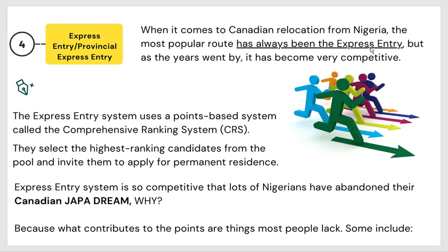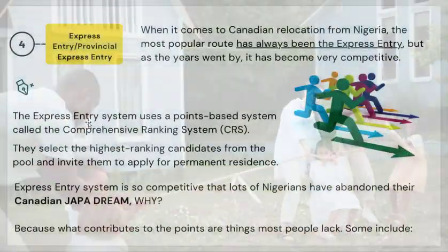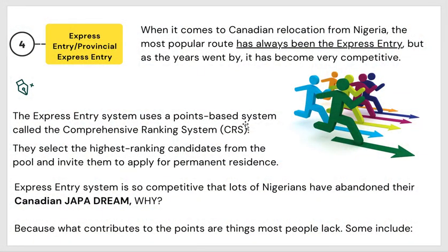Let's move to the express entry immigration program. When it comes to Canadian relocation from Nigeria, the most popular route has always been express entry, but as the years went by it has become very competitive. The express entry system uses a points-based system called the Comprehensive Ranking System (CRS). They select the highest-ranking candidates from the pool and invite them to apply for permanent residence.